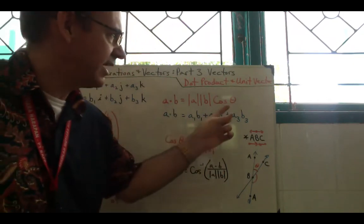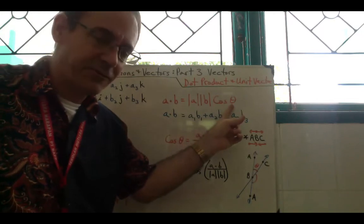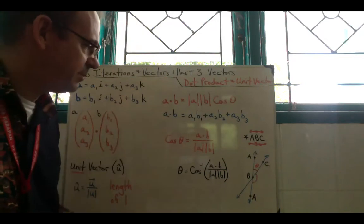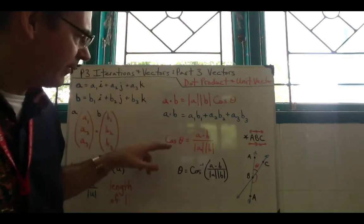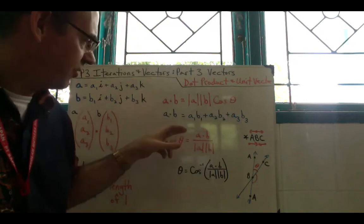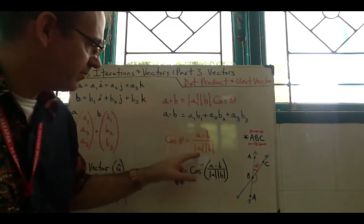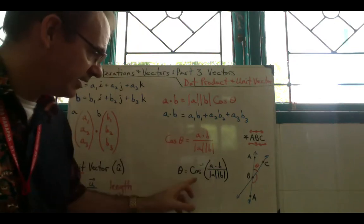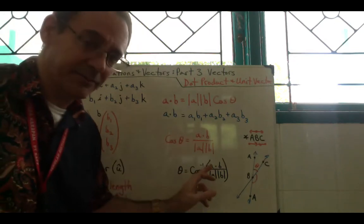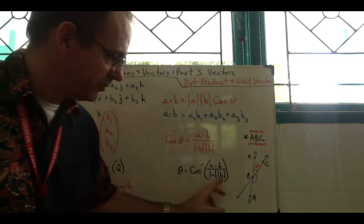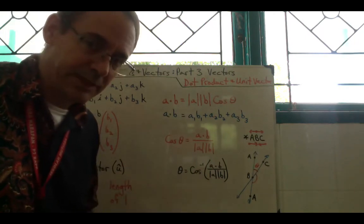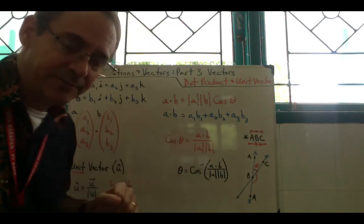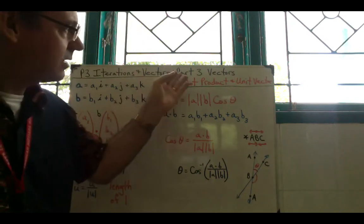You're going to see how it's used in the Cambridge examples, but mainly it's to determine the angle between the vectors. Most of the time you're solving for theta, which means rearranging the formula: theta equals the inverse cosine of (a dot b) divided by (magnitude of a times magnitude of b). We learned how to calculate magnitude in part two.